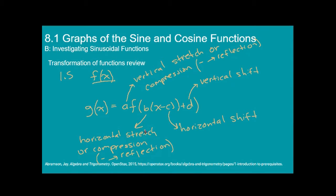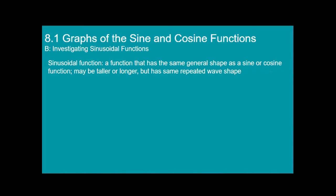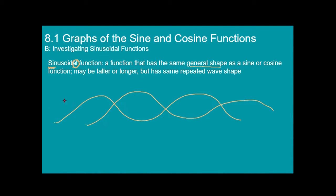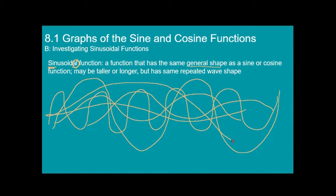If you need to review those before going on, please do — it will help you so much. Now we're going to apply these things to sinusoidal functions. A sinusoidal function is a function that has the same general shape as a sine or cosine function. Remember they both have the same shape — they're just shifted from each other. A sinusoidal function might be taller or shorter than the basic sine or cosine, or the peaks might be closer together or farther apart.